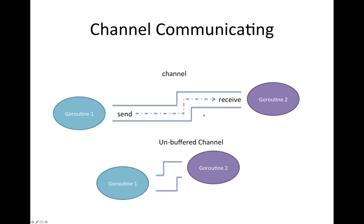Here I'm showing a buffered channel, meaning there's some space to put stuff in. The sending goroutine could do one or more send operations and goroutine2 wouldn't have to receive immediately because the information would be buffered — held for it. With an unbuffered channel, there's no place to store anything. If you send something, a receive must be available immediately.